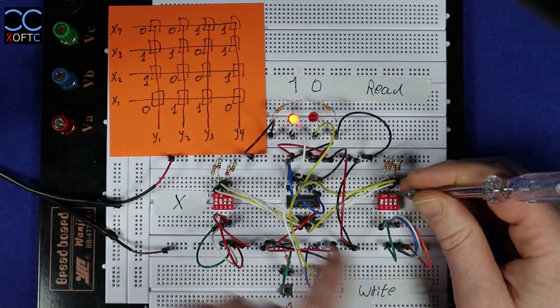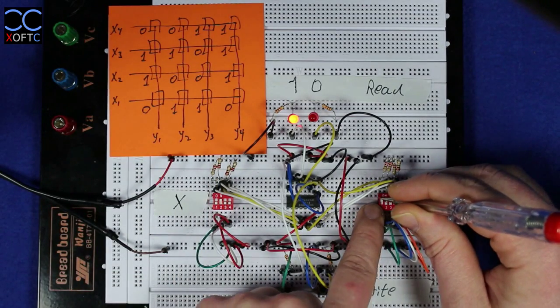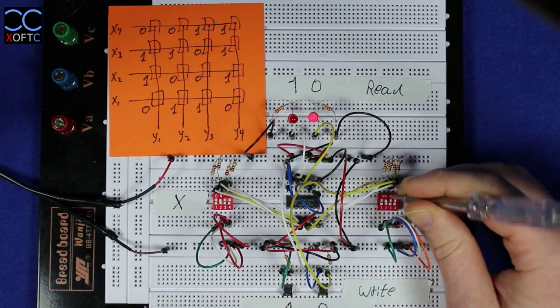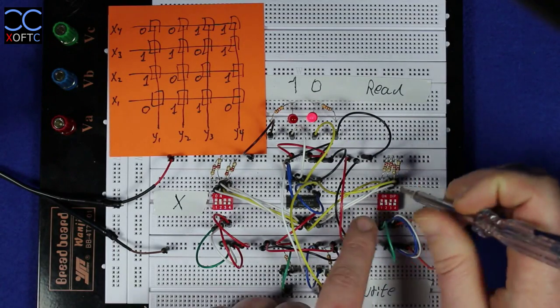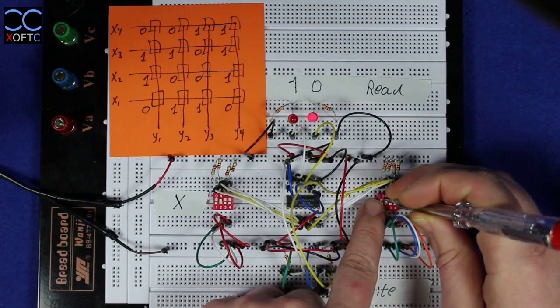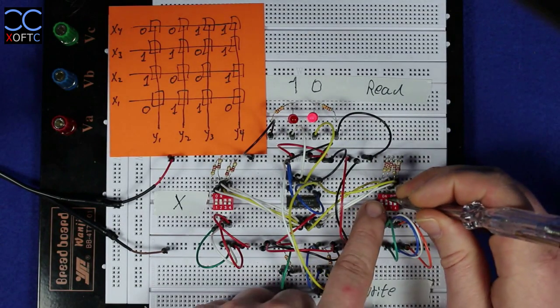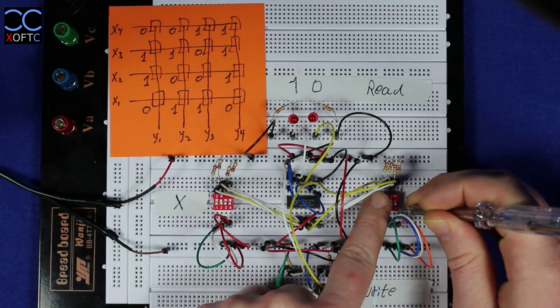When we raise Y1 we get a one, so it retained the value. And when we raise Y2 we got a zero, so that retained the value. And when we raise Y3 we also get a zero. And when we raise Y4 we got a one.